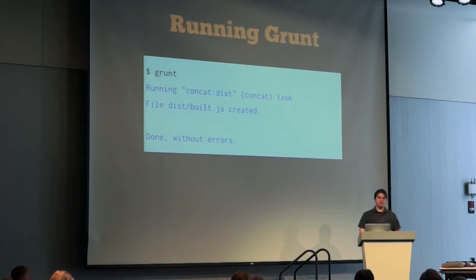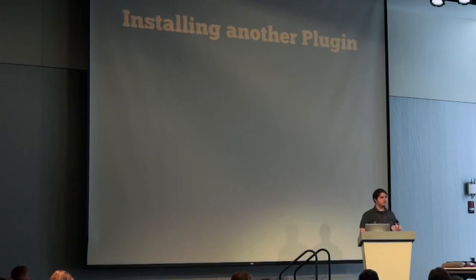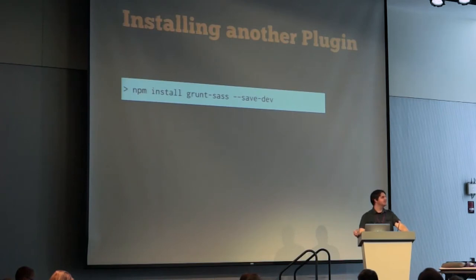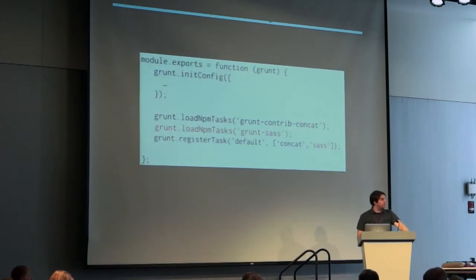Usually you're going to have at least a couple of things you want to do on a theme, so let's install another plugin — let's install one for Sass. If you use Less, the procedure's going to be really similar. We go to the Grunt.js website, go to the plugins page, and search for Sass. Click on the readme and it'll tell us how to install it: npm install grunt-sass --save-dev. We jump over to our package.json file and see that plugin has been listed there automatically. It's also been installed in the node_modules folder, but you don't have to mess with either of those.